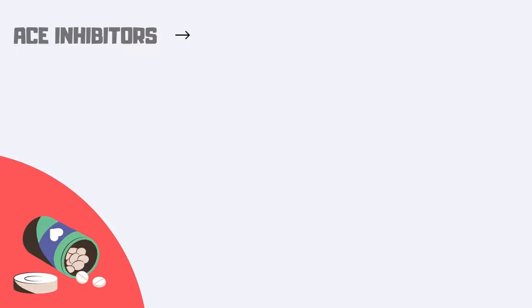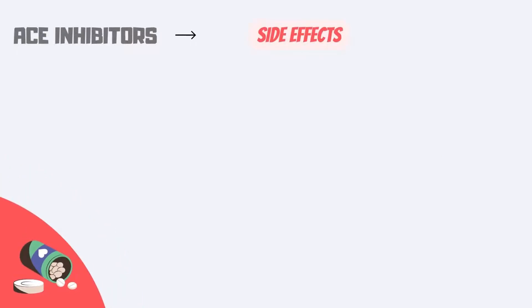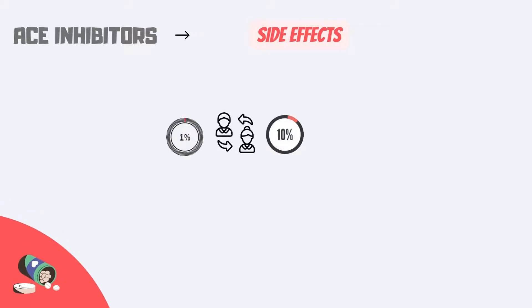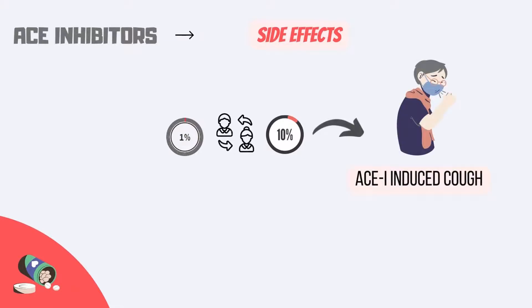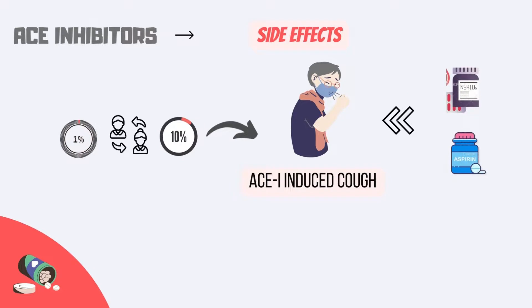Although ACE inhibitors are used as first-line treatment for hypertension, there are a few side effects of these drugs that should be diagnosed early and treated accordingly. About 1–10% of those who are taking ACE inhibitors will develop a dry, nonproductive paroxysmal cough, and there is no standard treatment for the cough. Experimental studies have shown that using non-steroidal anti-inflammatory agents and intermediate-dose aspirin can help with ACE inhibitor-induced cough.